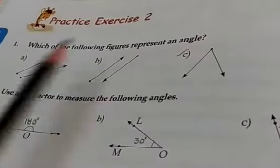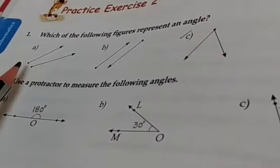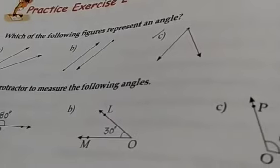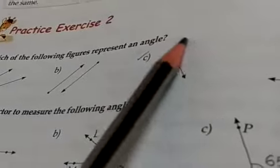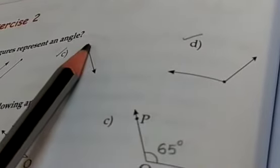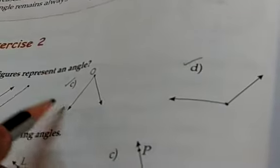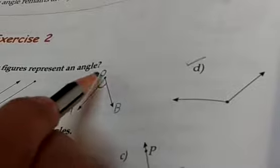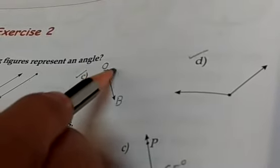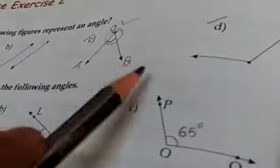Next, exercise 2: which of the following figures represents an angle? See here — are these two lines meeting at one particular point, that is the origin? No, so these are not angles. Observe figure C — you can see two lines there; you can name them angle OA or angle OB. They are meeting at a point — that is the vertex — so here an angle is formed. Figure C and figure D represent an angle.